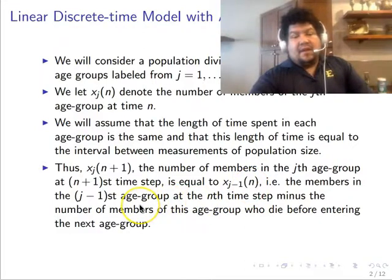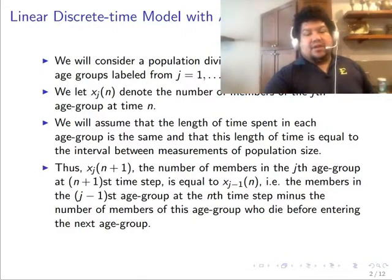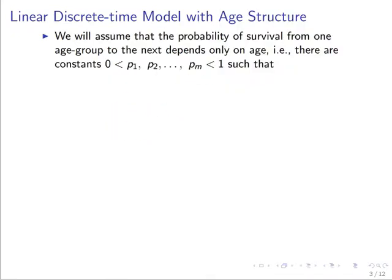We have to take into account those that survive and those that pass away due to natural causes. Survival is denoted with probabilities p sub k or p sub i. Each quantity p sub 1 through p sub m denotes the survival from one age group to the next. Notably, survival is a function of age — certain age groups are more prone to survive, while others are more exposed to dying from natural causes.